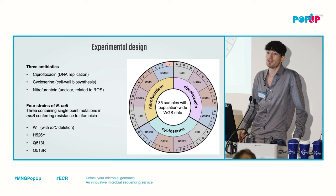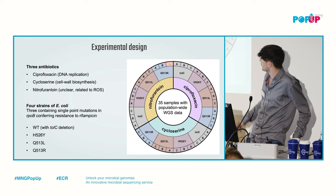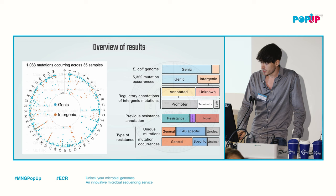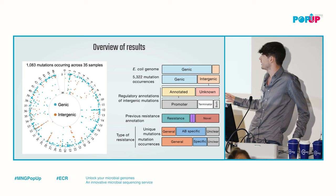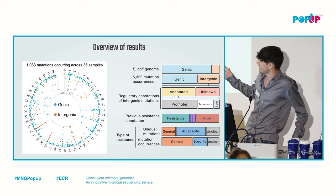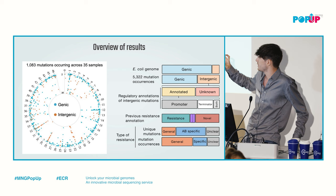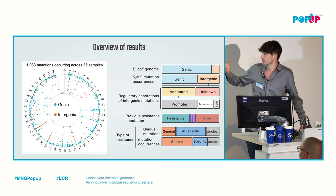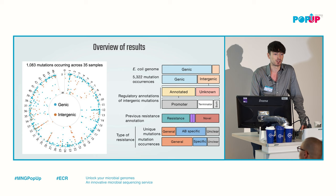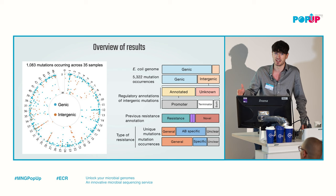One sample failed, leaving 35 samples for analysis. This is an overview of the results: 1,083 mutations across the E. coli genome detected across all 35 samples. The radial axis shows the number of samples each mutation occurred in — closer to the middle are mutations occurring in almost every sample, while around the edge are mutations occurring in only one or two samples. For the most part, we only consider mutations occurring in two or more samples, as that is indicative of selective pressure.